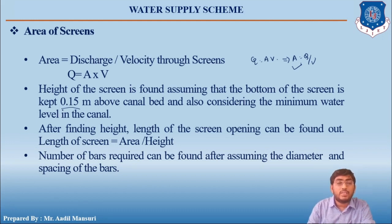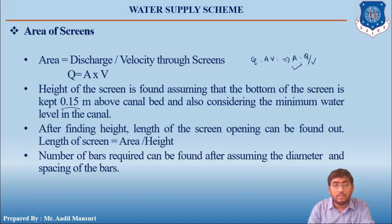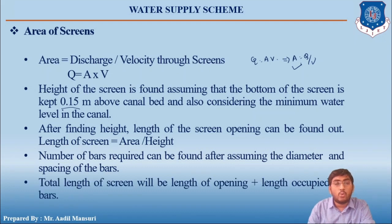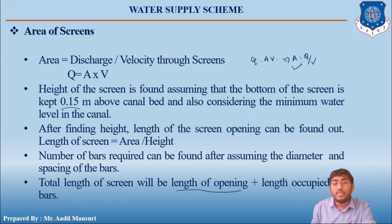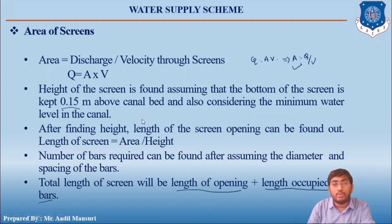After finding height, the length of the screen opening can be found as: length equals area divided by height. The number of bars required can be found by assuming a bar diameter of 15–20 mm and spacing of 40–50 mm center to center. Total length of the screen equals the length of the opening plus the length occupied by bars.